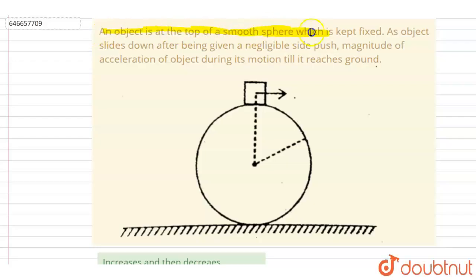the top of a smooth sphere which is kept fixed. As the object slides down after being given a negligible push, the magnitude of the acceleration of the object during its motion till it reaches the ground. So if you see here